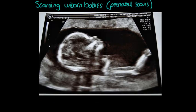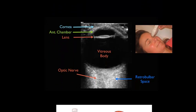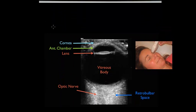Another soft tissue that ultrasound is good for scanning is the eye. Here's the device that is placed over the eye, and you get an image of the eye — you can see the cornea, the outside of the eye, the lens, and even the optic nerve is slightly visible back here in the retina.